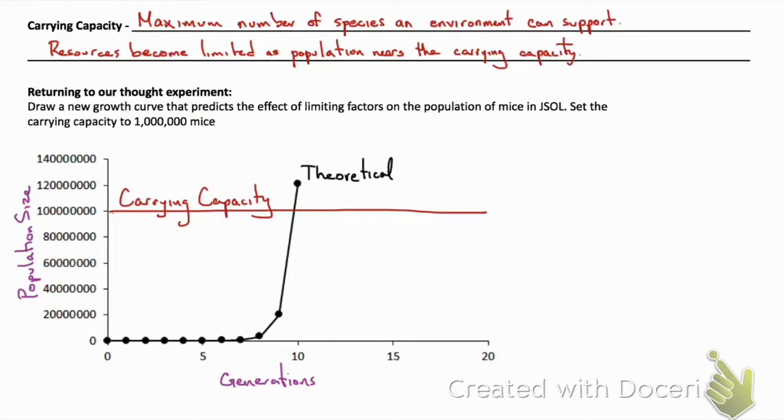Over time, the population growth rate is actually going to slow as there is competition for resources. Competition is going to reduce the reproductive success and survival of organisms.